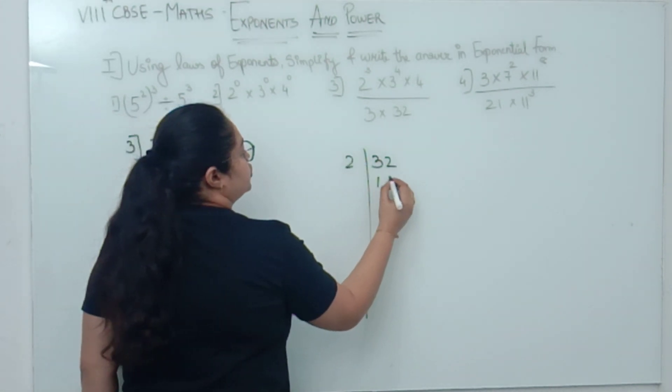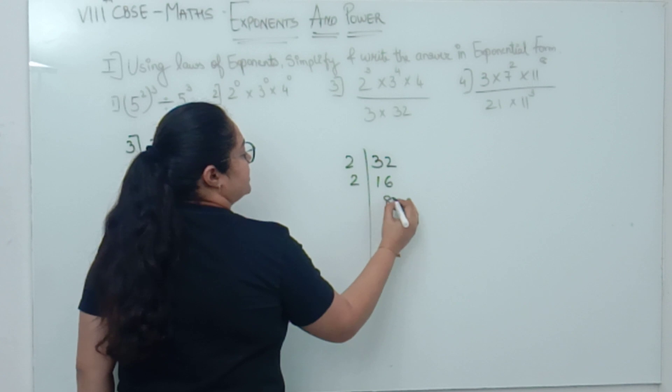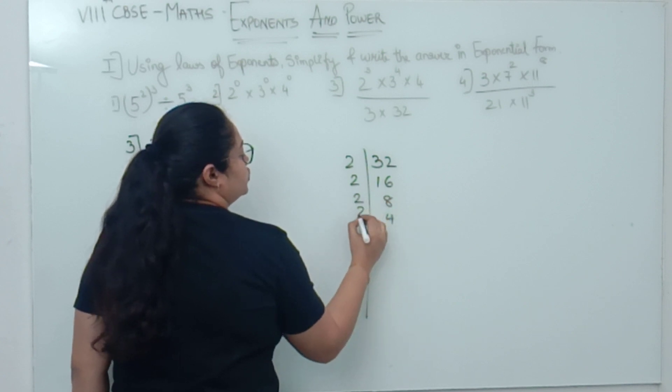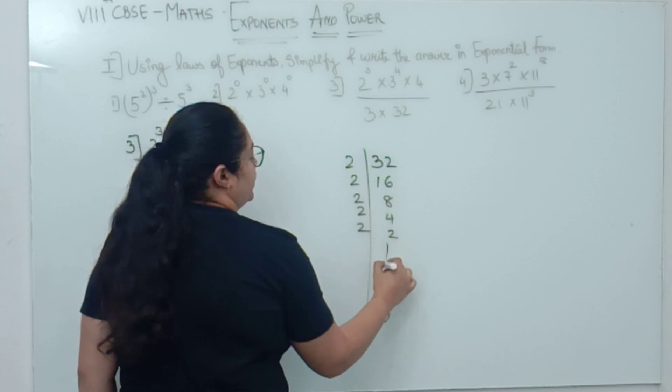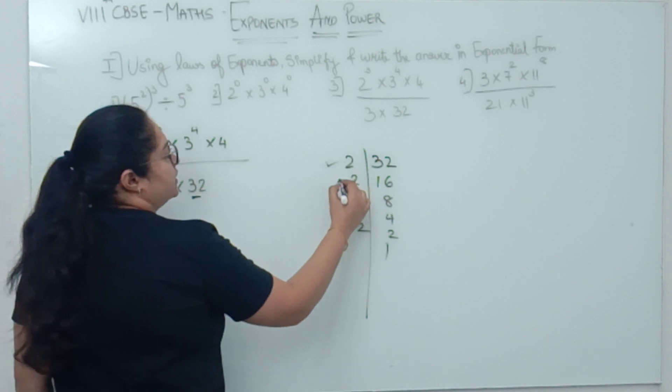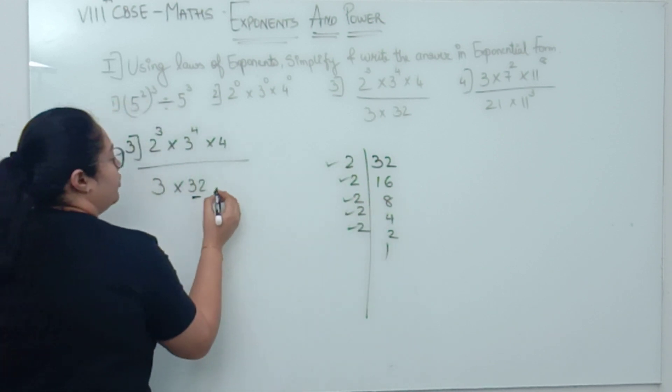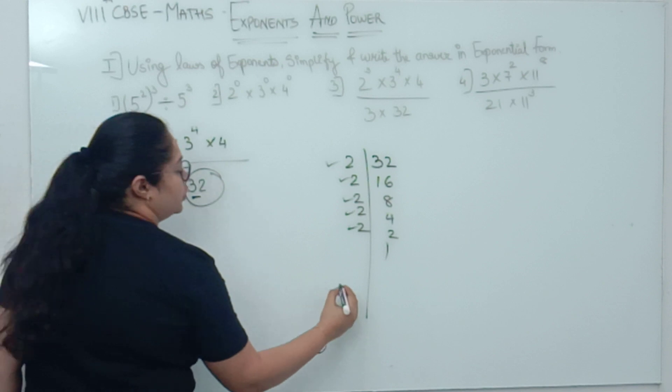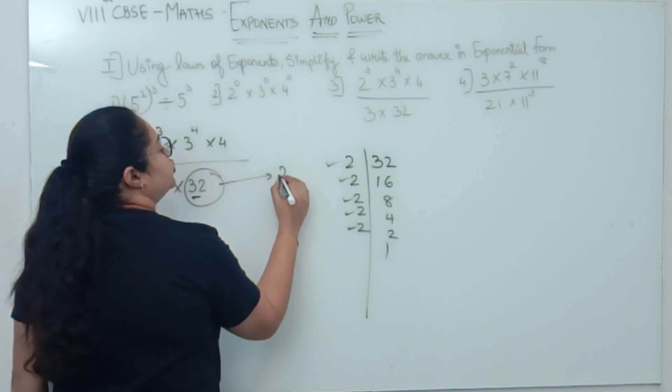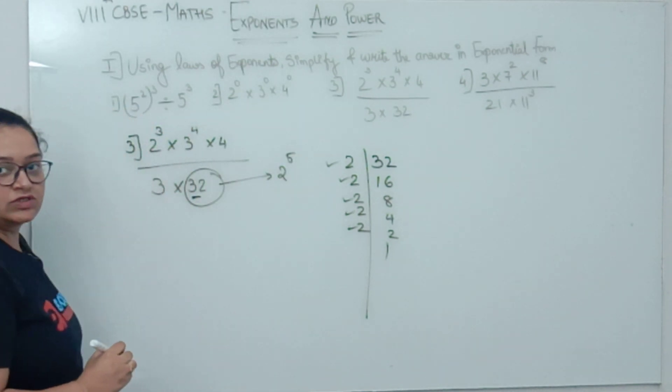That is, 2 1s, 2 16s, 2 8s, 2 4s, 2 2s, 2 1s. How many times did 2 come? 1, 2, 3, 4, 5. So, how will you write 32? You can write 32 as 2 raised to 5 also.